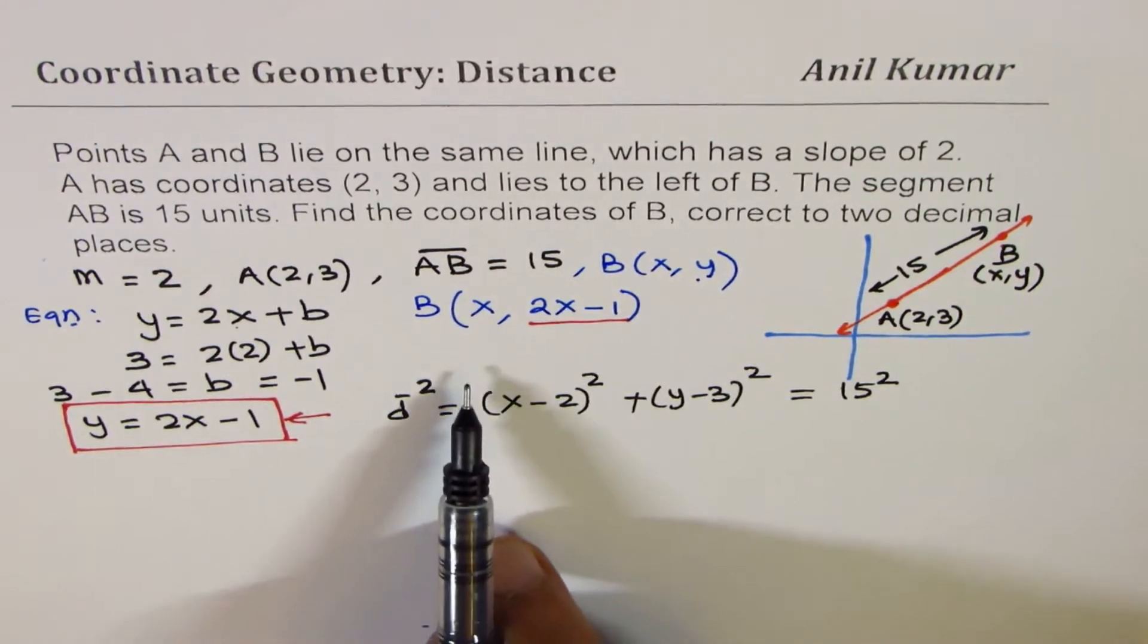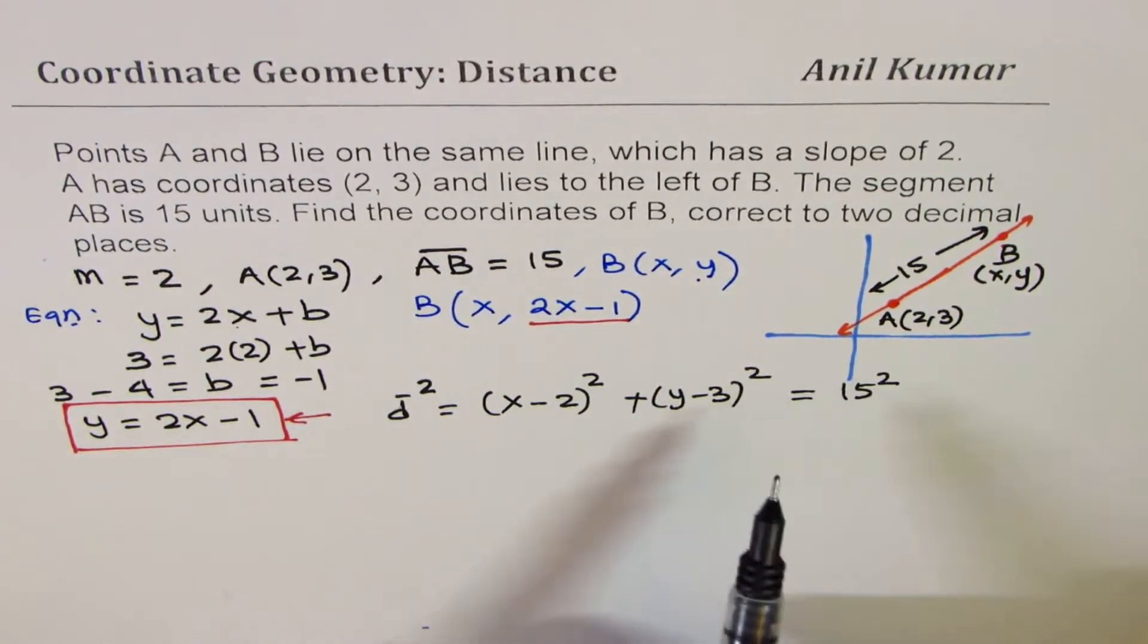So, we have, instead of writing square root, I squared both sides, right? So, we get that distance.